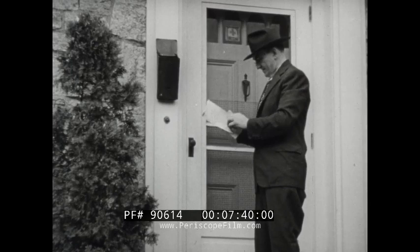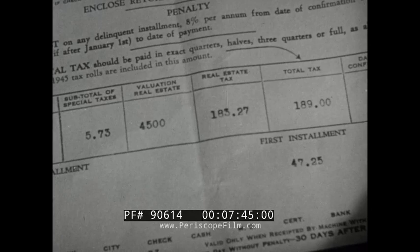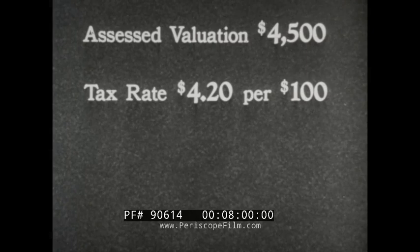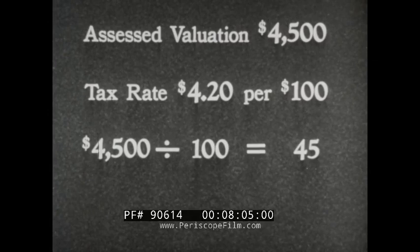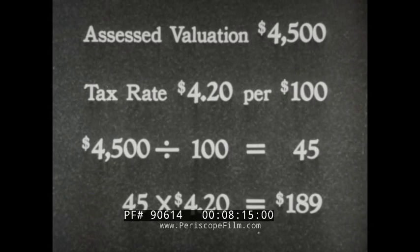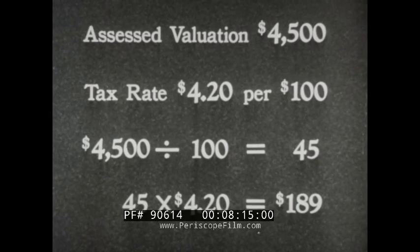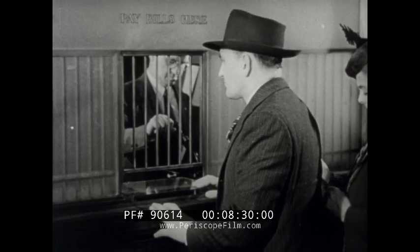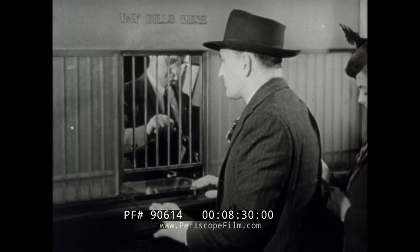Now Mr. Johnson receives his tax bill from the tax collector. This bill tells him what his property tax payment will be for the year. Since his property is assessed at forty-five hundred dollars and his tax rate is four dollars and twenty cents on each hundred dollars of assessed valuation: forty-five hundred dollars divided by one hundred equals forty-five. Forty-five times four dollars and twenty cents equals one hundred eighty-nine dollars. This is his property tax. Mr. Johnson pays one hundred eighty-nine dollars as his share of the cost of public services in his community.